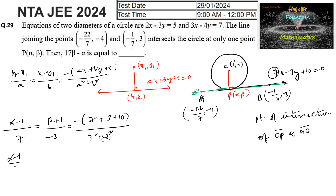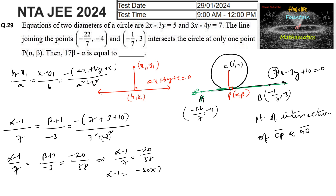So α minus 1 over 7 equals β plus 1 over minus 3 equals minus 20 over 58. For α: α minus 1 over 7 equals minus 20 over 58, so α minus 1 equals minus 140 over 58, which simplifies to minus 70 over 29. Therefore α equals minus 70 over 29 plus 1 equals (minus 70 plus 29) over 29 equals minus 41 over 29.